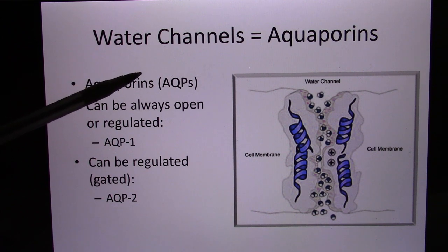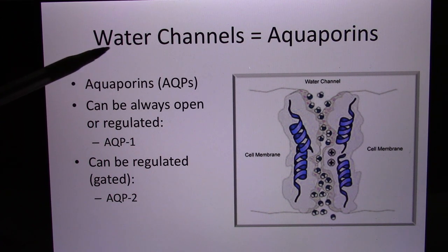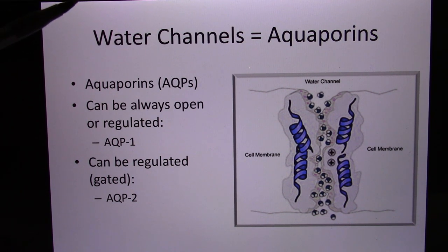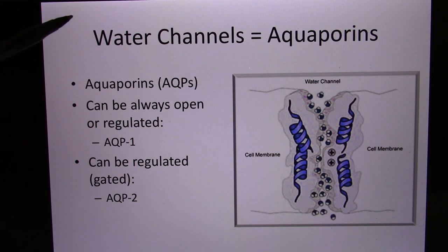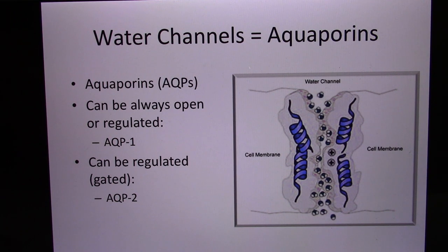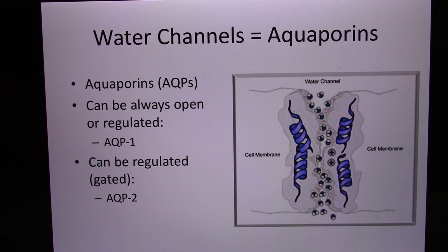When your body is dehydrated, more aquaporins are placed and more water is taken back, so you keep the water and your urine becomes very concentrated. If your body has too much water, fewer aquaporins are placed, more water goes to the urine, and your urine becomes more diluted. This is how the body regulates urine concentration to maintain water homeostasis — your osmolarity, your body concentration. So your urine concentration can vary a lot.